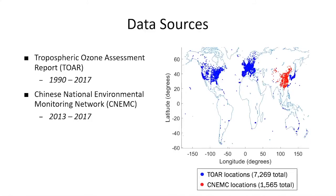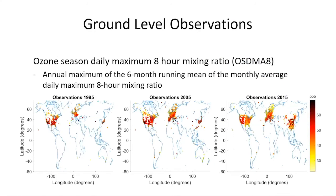We used two main observational data sources. The Tropospheric Ozone Assessment Report has high spatial coverage in North America, Europe, South Korea, and Japan. Each location shown was measured at least one year during the 1990–2017 period, though not necessarily every year. We also included data from the Chinese National Environmental Monitoring Network, which came online in 2013 and ran through 2017. Hourly output was processed to the ozone season daily maximum eight-hour mixing ratio. By 2015, China data is added, giving high spatial coverage in North America, Europe, and China.